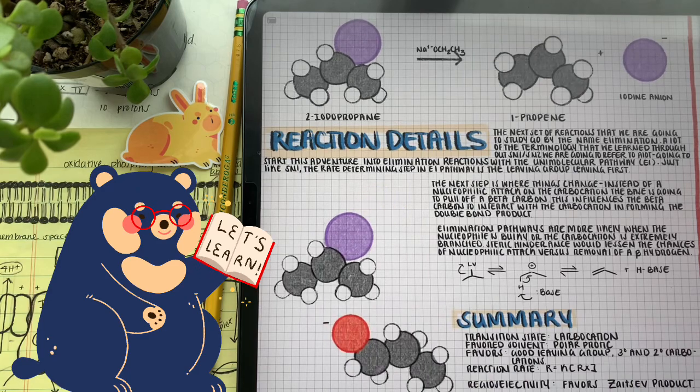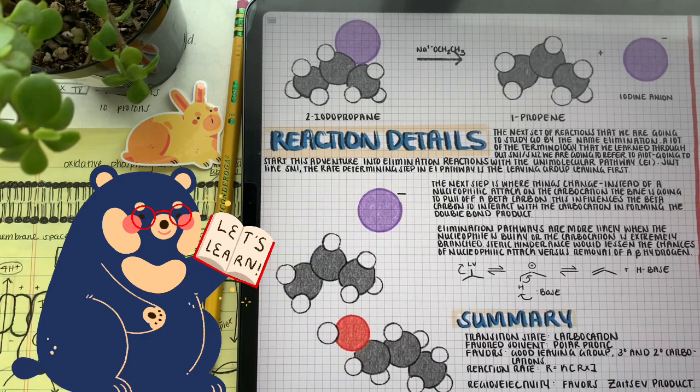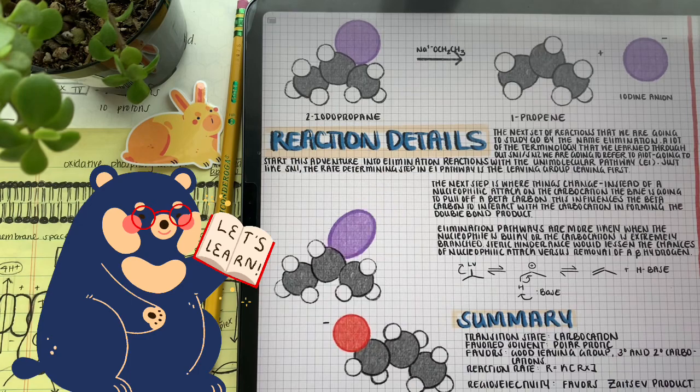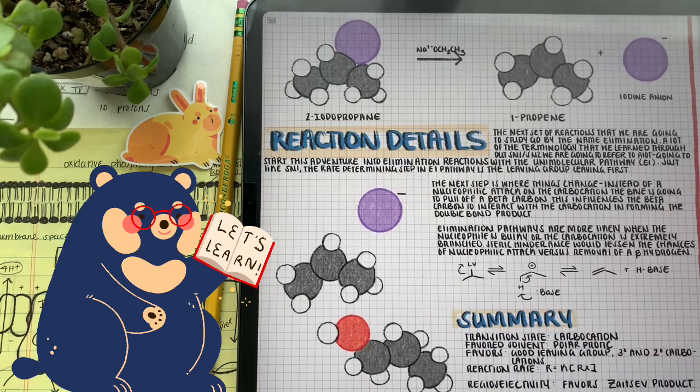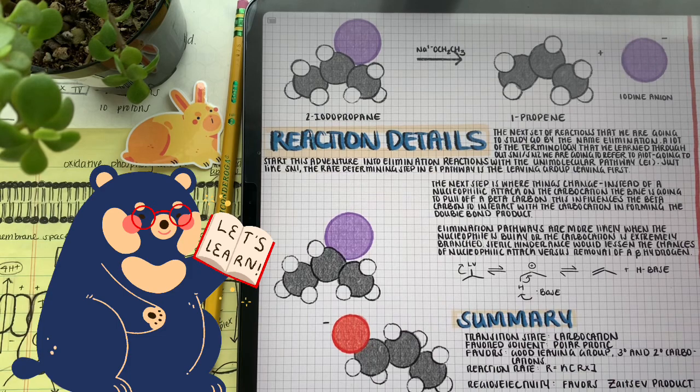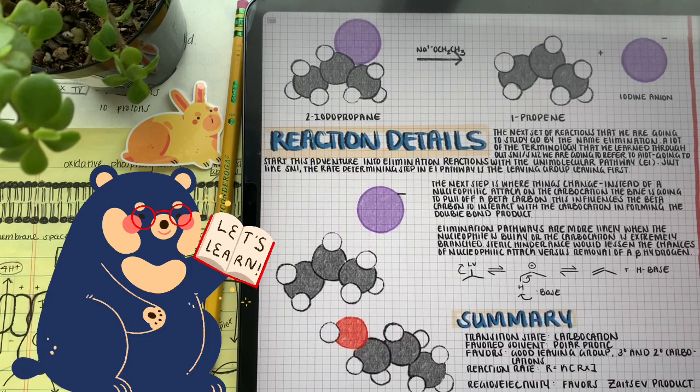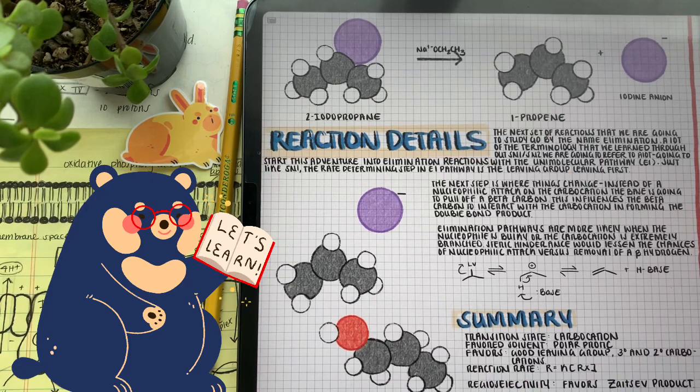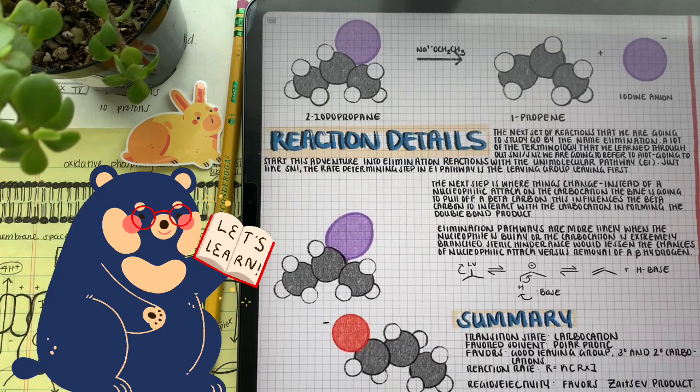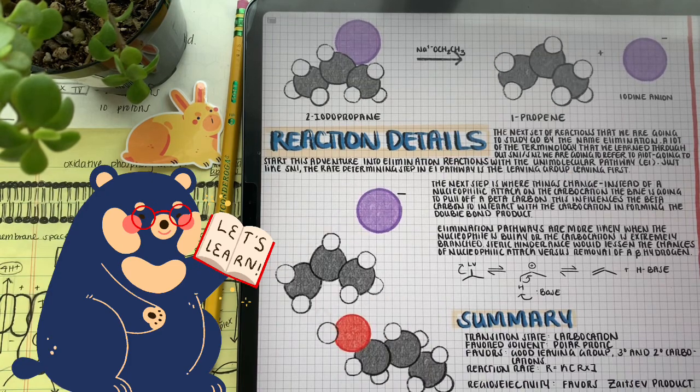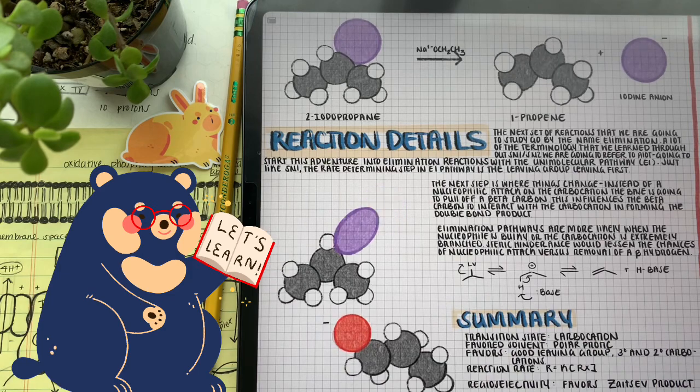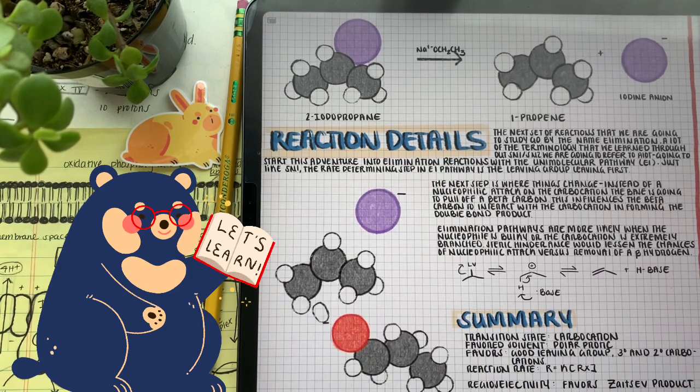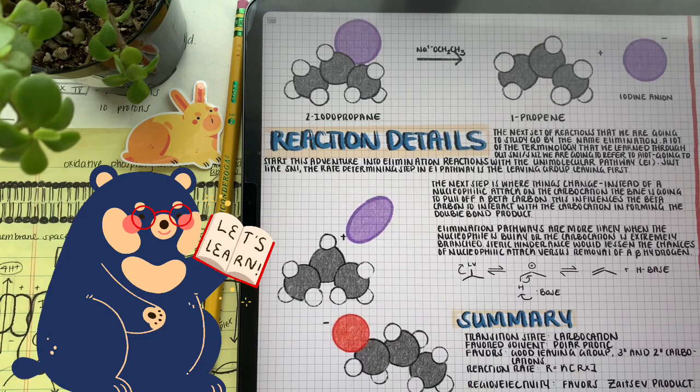Despite the fact that our base is attacking the beta hydrogen throughout this reaction, E1 pathways are really similar to SN1 pathways. They prefer tertiary or secondary carbocation since we have a carbocation intermediate. Throughout this example that we've been analyzing, it doesn't really matter what beta carbon our base attacks, since we're going to form the same double bond regardless, but this isn't always the case.